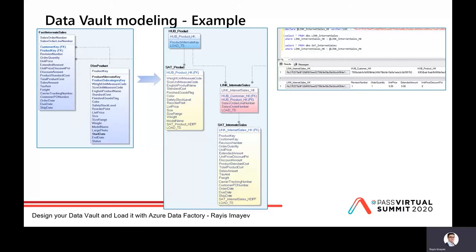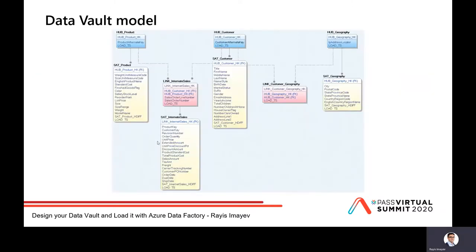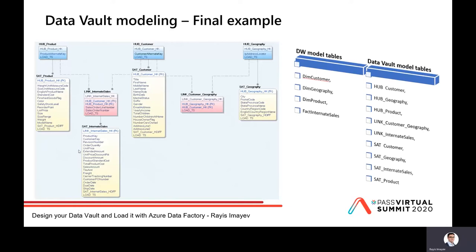The satellite upload process first checks if the hash key values already exist in the satellite, and secondly checks if there's any difference between hash values. If the value is different, that means we need to create a new version of that hub product hash key-related record within the satellite table. This is an example of how four tables from the Kimball approach — customer, geography, product, and fact internet sales — have been transformed into nine tables within a Data Vault methodology.